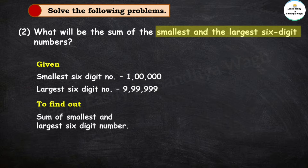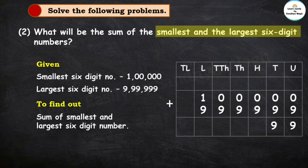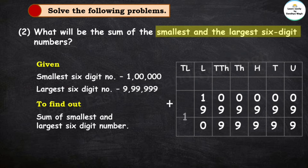For that, we are going to add these two numbers: 1,00,000 and 9,99,999. So 0 plus 9 is 9, 0 plus 9 is 9, 0 plus 9 is 9, again 0 plus 9 is 9. And here 1 plus 9 is equal to 10, so we write 0 and carry 1.